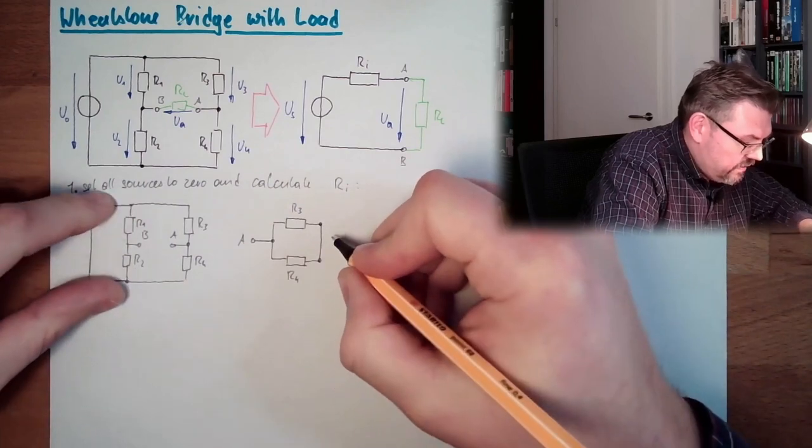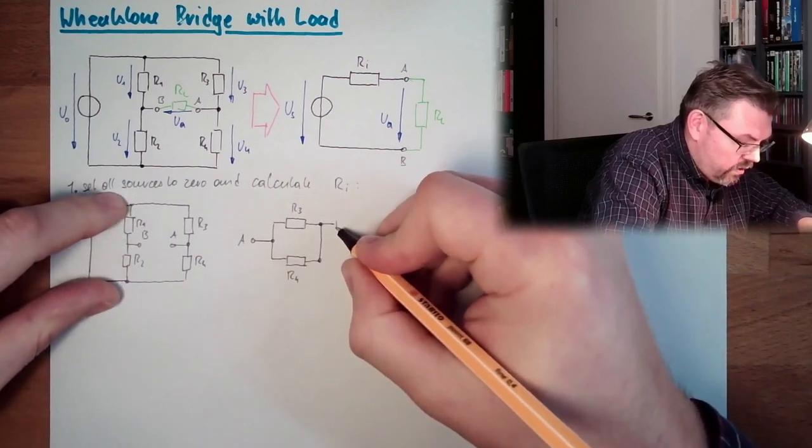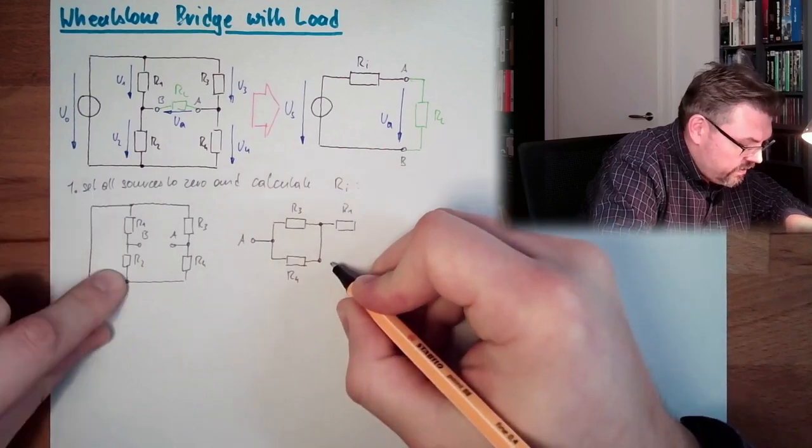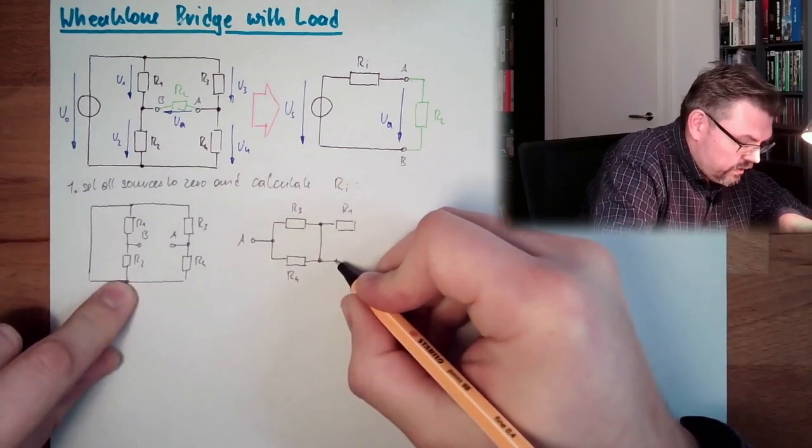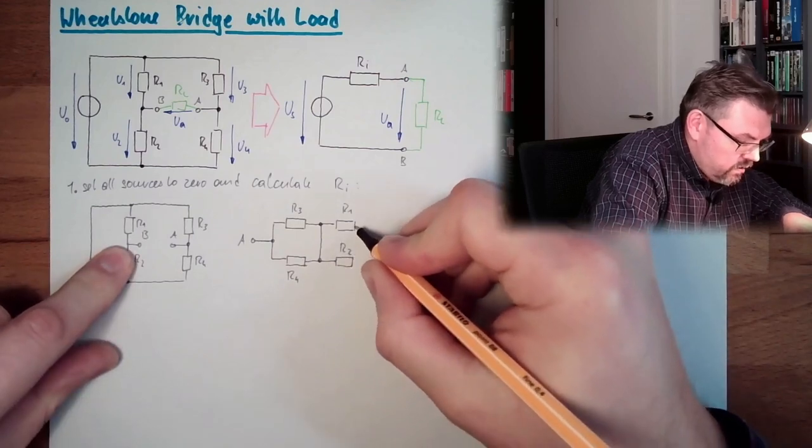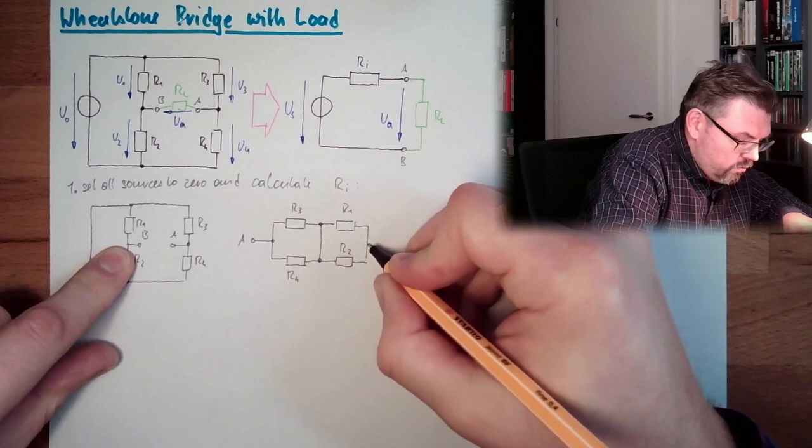And now what is next, a combination. So we have here, is connected, and we have here R1 and here R2 as well, and then we are at B.